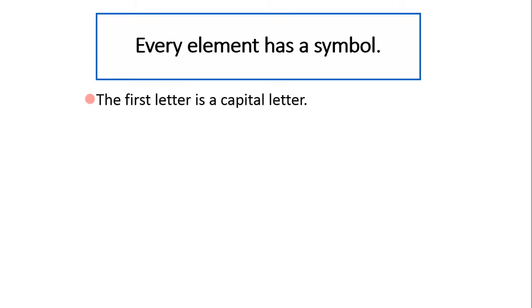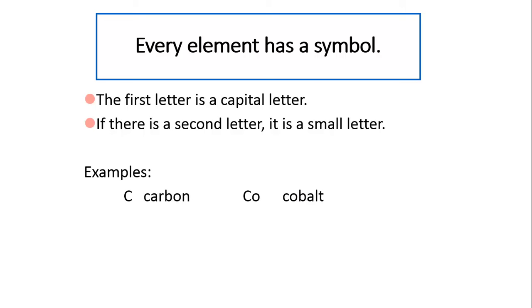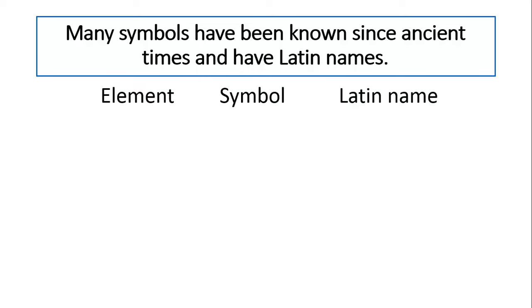Every element has a symbol. The first letter is a capital letter. If there is a second letter, it is a small letter. Examples include C, carbon. Co, cobalt. N, nitrogen. Ca, calcium.